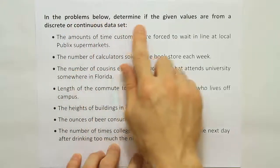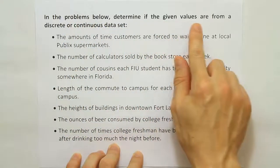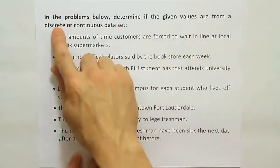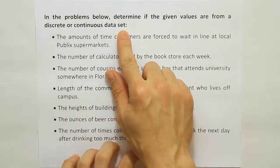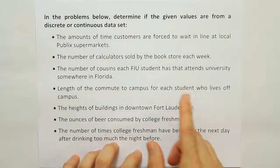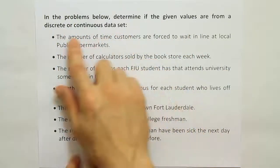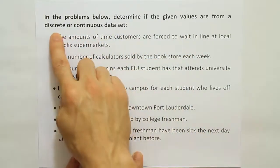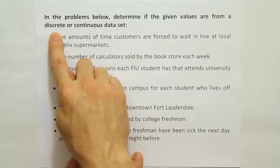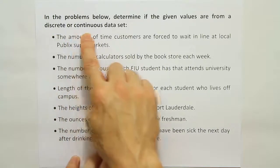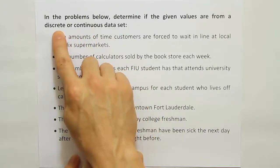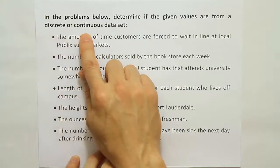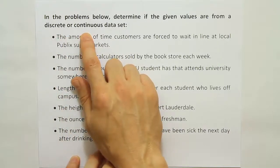In the problems below, determine if the given values are from a discrete or continuous data set. In order to work out this problem, we have to know the difference between discrete data sets and continuous data sets. So what makes a set of numbers discrete, and what makes a set of numbers continuous?